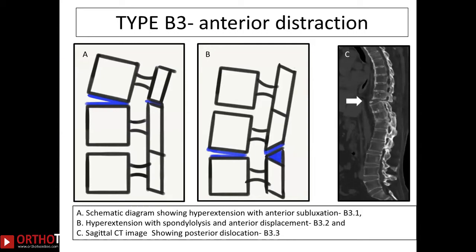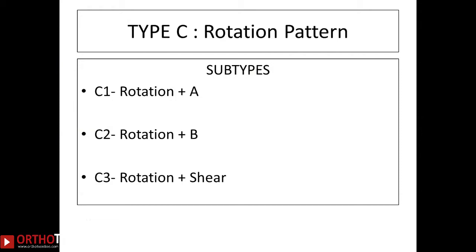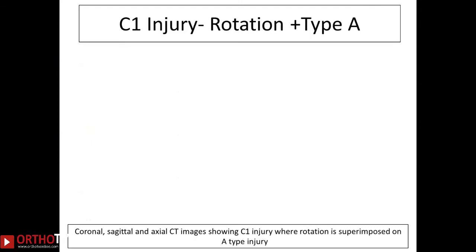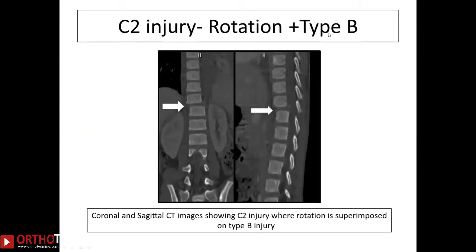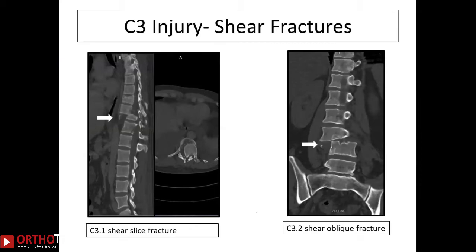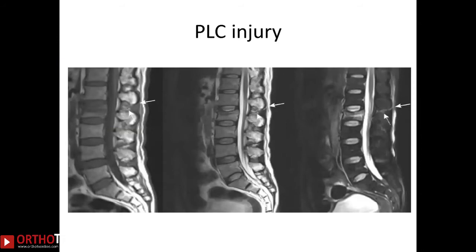The hyperextension anterior distraction type of injury is classically seen in fused spines such as ankylosing spondylitis and DISH — the spine acts like two long segments and these are highly unstable injuries. Finally, fracture dislocation or translation type injuries (Type C) can involve flexion with dislocation, flexion distraction, or shear fractures in both the coronal and sagittal planes. In Type C injuries, all three columns of the spine are involved and they are highly unstable.